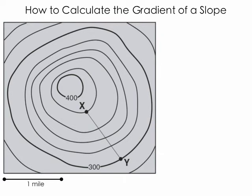Okay, so let's take a look at how we can calculate the gradient of the slope on a topographic map. Here you see a simple topographic map of a hill, and I want you to notice that we have a map scale down in the bottom left-hand corner. We have several contour lines, two of which are marked, and we have two points, X and Y.